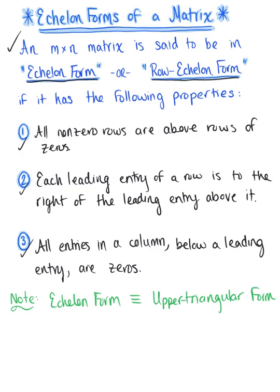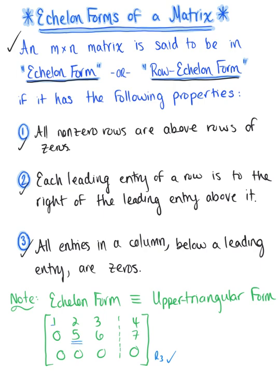An example of such a matrix might look like the following. Consider the augmented matrix with first row [1, 2, 3 | 4], second row [0, 5, 6 | 7], and third row [0, 0, 0 | 0]. We can see that all nonzero rows are above the row of zeros — row three is our zero row. Each leading entry of a row is to the right of the leading entry above it; the leading entry of the second row is 5, which is to the right of the leading entry above it. And all entries in a column below a leading entry are zeros.